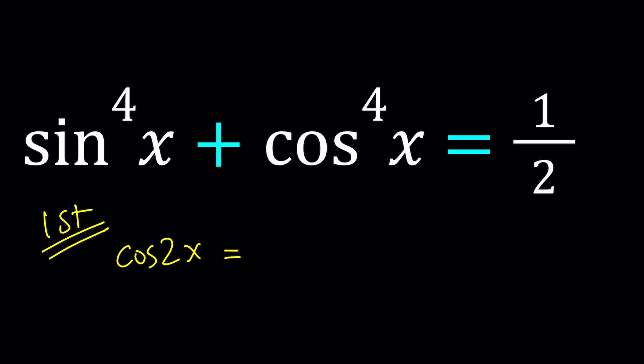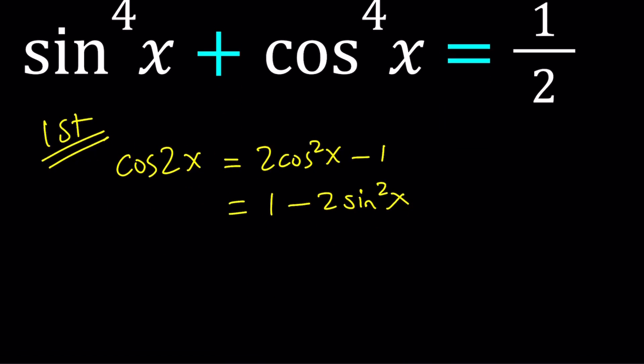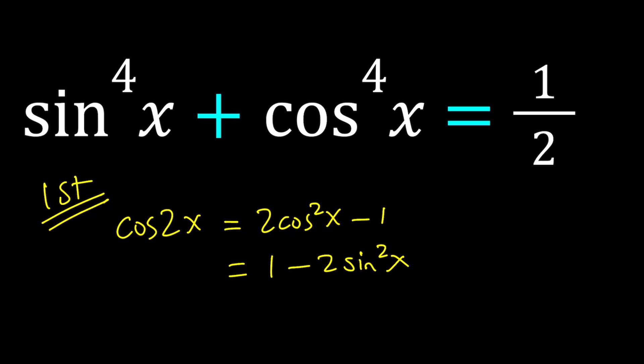Remember, cosine 2x can be written in three ways. One of them is cosine squared minus sine squared, but then by using the Pythagorean identity, we can also write it as two cosine squared minus one, and also one minus two sine squared x. So how do we use these? These identities are super helpful, especially if you want to reduce power. I think it's called reduction of powers, and it's also used with integrals.